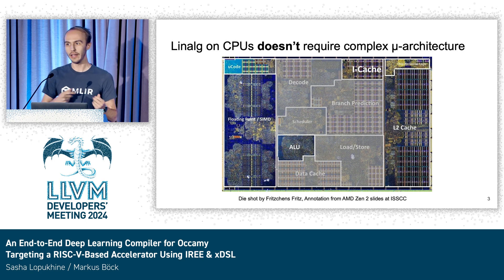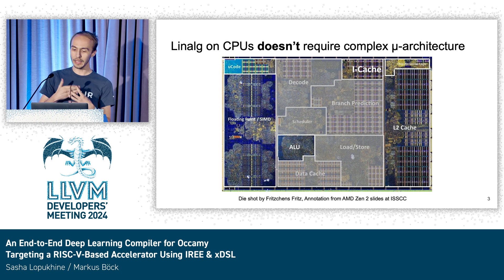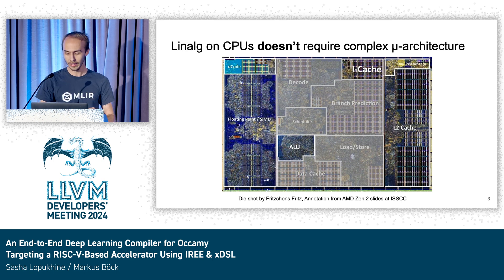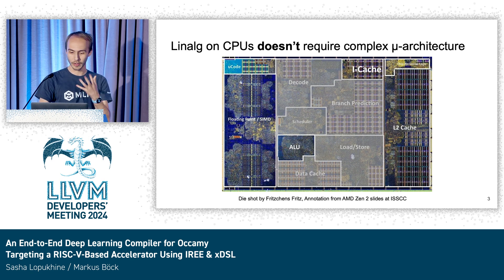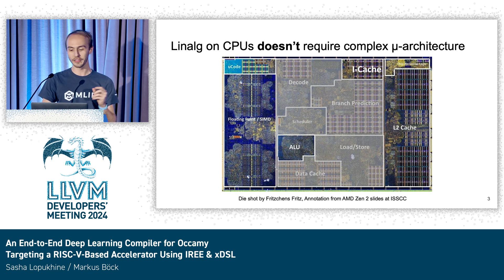That was sort of the idea that ETH Zurich had when they wrote the RISC-V Snitch core. What they tried to do is get high-level information into the RISC-V ISA and provide very neat and smart extensions to replace all of these components, in order to gain a lot of power efficiency and a very small die area.